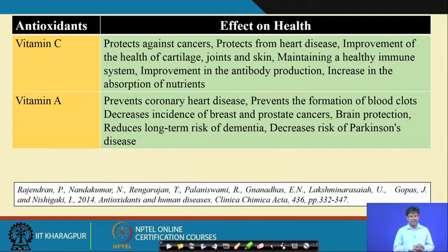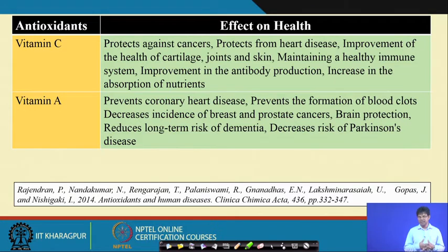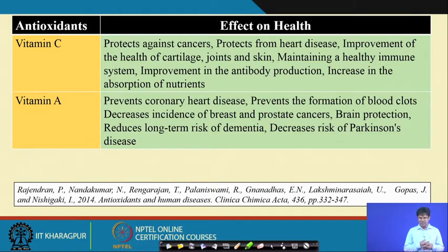These secondary metabolites — polyphenols, vitamins, coenzymes — are required in the daily intake of foods to protect and maintain a healthy body. Diet control is needed. Diet should include fruits and vegetables, mostly free from pesticide residues.